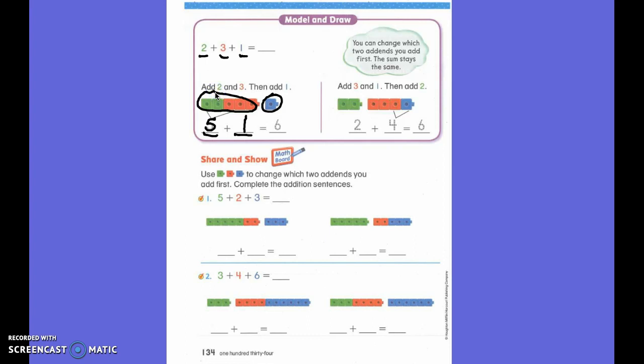So, raise your hand if you know what 5 plus 1 equals. First grade? 6. Wonderful. That's a lot easier to figure out than 2 plus 3 plus 1. But, if I know that 5 plus 1 equals 6, then 2 plus 3 plus 1 must equal? 6. You are so right. Thank you.